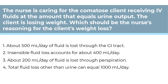The nurse is caring for a comatose client receiving IV fluids at an amount that equals the urine output. The client is losing weight. Which should be the nurse's reasoning for the client's weight loss? Number 1, About 500 mL a day of fluid is lost through the GI tract. Number 2, Insensible fluid loss accounts for about 400 mL a day. Number 3, 200 mL a day of fluid is lost through perspiration. Number 4, Total fluid loss other than urine can equal 1000 mL a day. This is an application question in the assessment phase of the nursing process, asking you to assess the fluid loss and why the patient is losing weight.